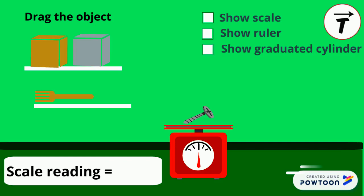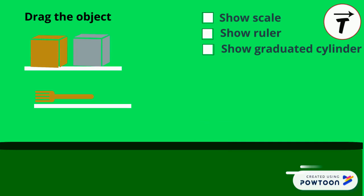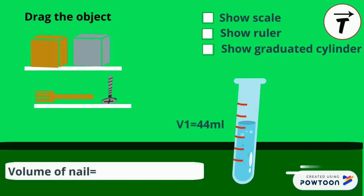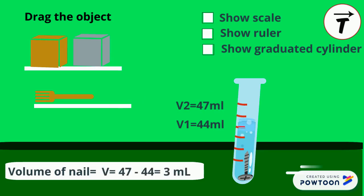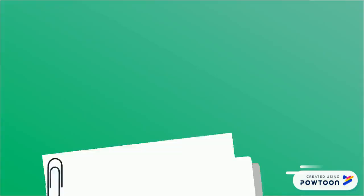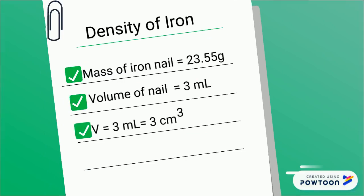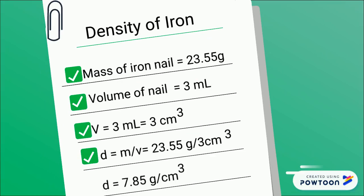We will now check the density of the iron nail. To find the volume of an iron nail of mass 23.55 grams, we use the method of displacement of liquid, as the iron nail is an irregular solid and we cannot apply a formula to find its volume. Before immersing the nail, the volume of water is 44 milliliters. After immersing it, the volume becomes 47 milliliters. So the volume of the iron nail is 3 milliliters, or 3 centimeters cubed. Following the same steps, the density of the iron nail is 7.85 grams per centimeter cubed — the same as the iron cube.